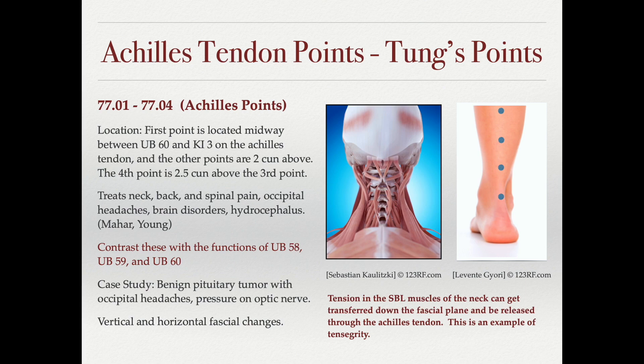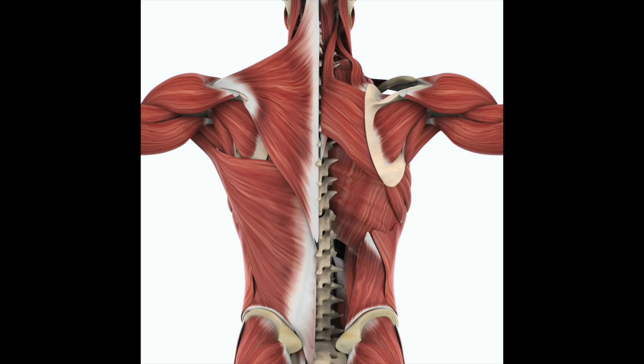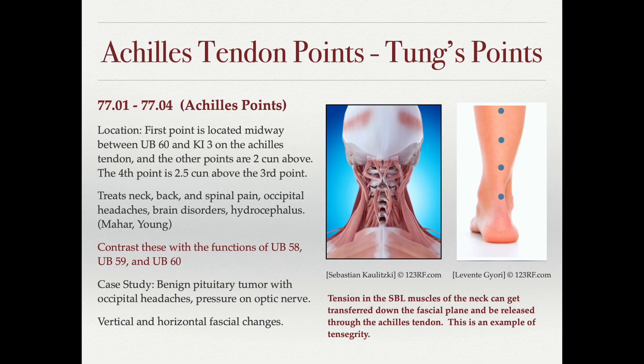On top of those muscles we have the trapezius, but understand that the trapezius is not on the superficial backline. The superficial backline includes many of the little muscles in the neck. You can see in the image that the needling is able to reach these deep levels.